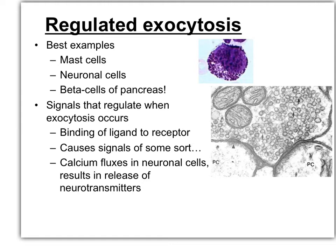Regulated exocytosis: these are events that occur due to some signal. The best examples we have are the process used by mast cells — mast cells release histamine when you have an allergic attack. Neuronal cells release neurotransmitters at the right time, at the right place. And beta cells of the pancreas involve the secretion of insulin. Beta cells are only insulin, but the alpha cells of the pancreas secrete glucagon.